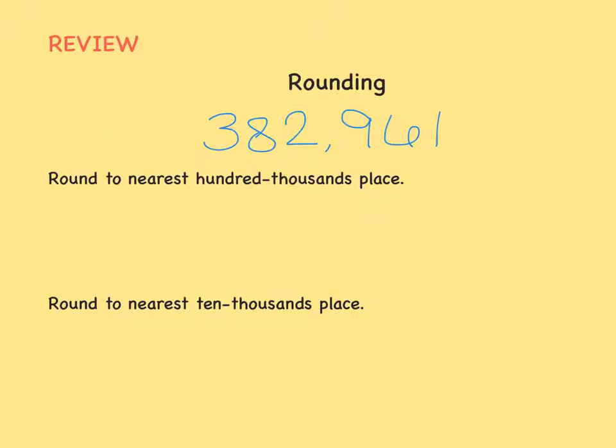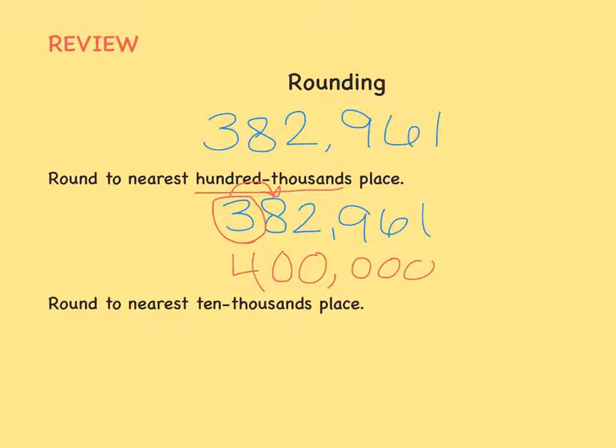You have learned how to round numbers to different places. Let's first round this number to the nearest hundred thousandths place. So first we circle the digit we're rounding to in the hundred thousandths place. We look next door for what to do. We see an eight, so we know the three is going to round up to a four, and everything to the right becomes zeros.